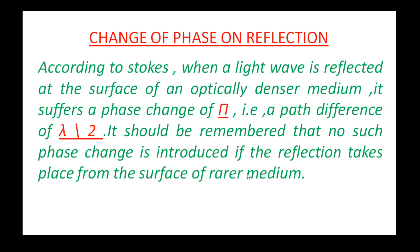Only when going from rarer to denser medium — or denser to rarer medium — does phase change occur upon reflection. If reflected from a rarer medium surface, there is no change in the phase. The lambda change in path difference only applies in the rarer-to-denser or denser-to-rarer case.